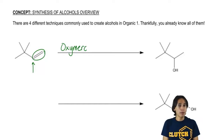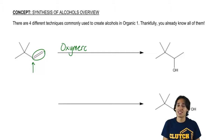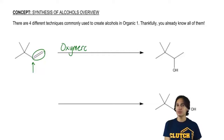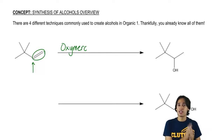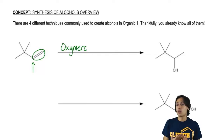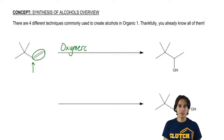Remember that carbocations have a tendency to do what? They shift. So in this case, this is an example of where we can add Markovnikov alcohol without worrying about a rearrangement.